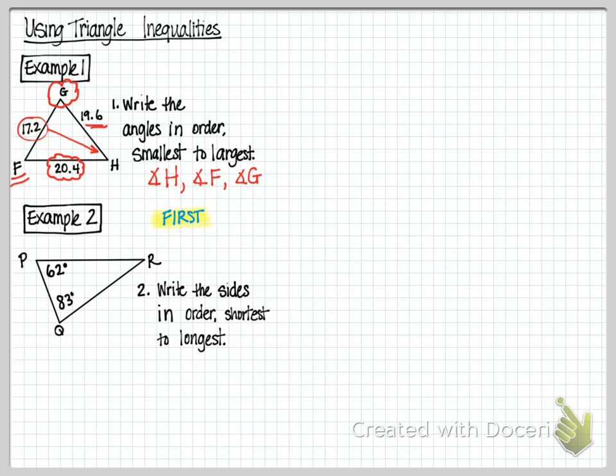To do this problem, first, we need to know the measure of all three angles. Do not try to do these problems until you have all three angles figured out. So, we take the 180 and subtract the two angles that we know, we get 35, so put the 35 in there.